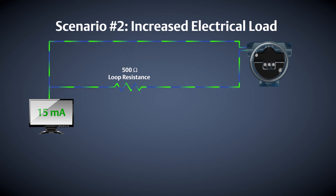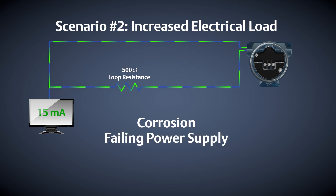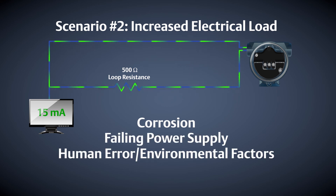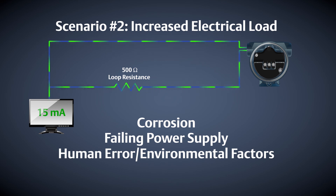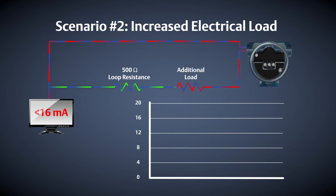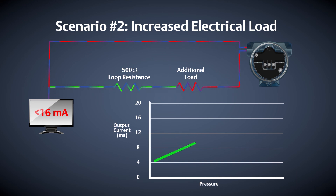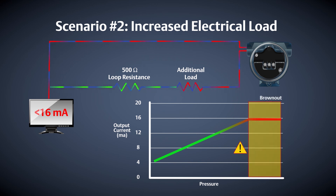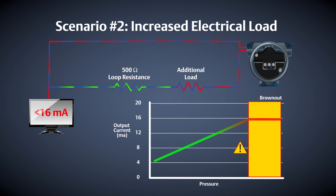The second scenario is an increase in the electrical load of the wiring loop. This can be caused by corrosion, a failing power supply, human error, or other environmental factors. In this scenario, the electrical loop was designed to have 500 ohms of resistance. When additional resistance is inadvertently added to the control loop, the reliability of the control loop is compromised. With an increased wiring loop resistance, there may not be enough voltage for the transmitter to drive the loop to the proper milliamp value or even to an alarm state. In this example, the transmitter is unable to go above 16 milliamps.